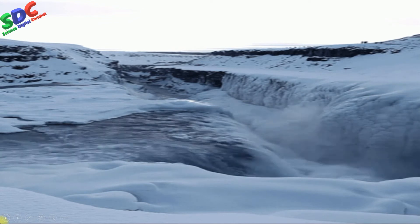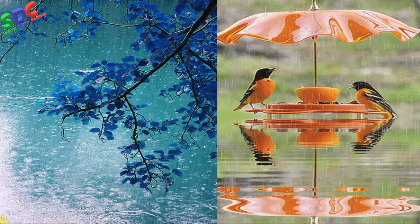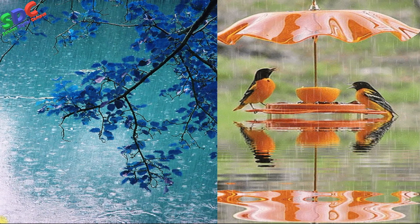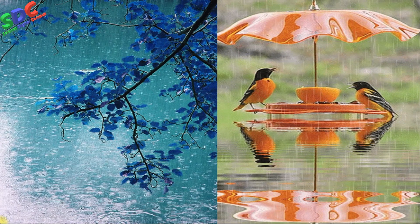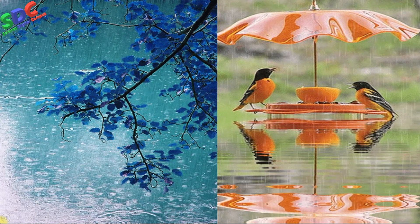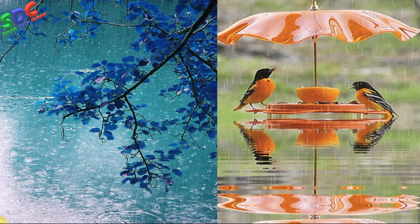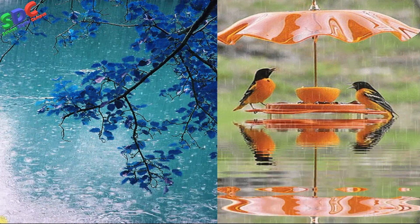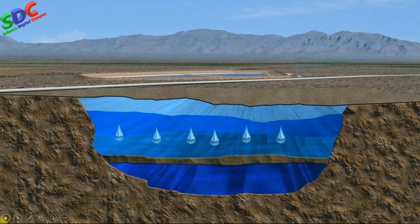On our Earth, rain is the main source that fills all the water bodies like ponds, rivers, and lakes. Some amount of rainwater also goes into the soil, and this is called underground water.